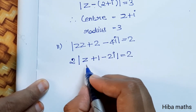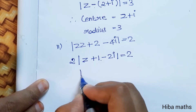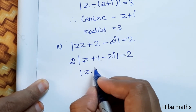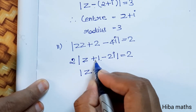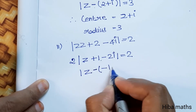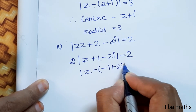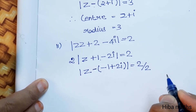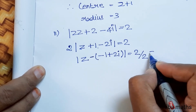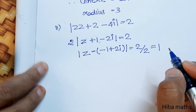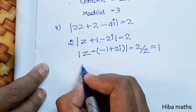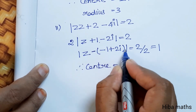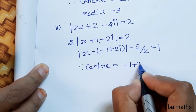Since the general equation has a minus sign, we rewrite as z minus (minus 1 plus 2i) equals 1. Therefore, center is equal to minus 1 plus 2i and radius is equal to 1.